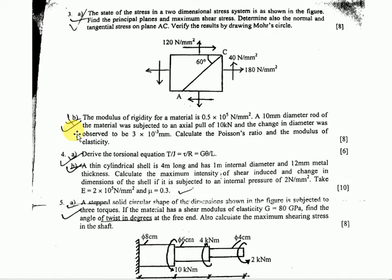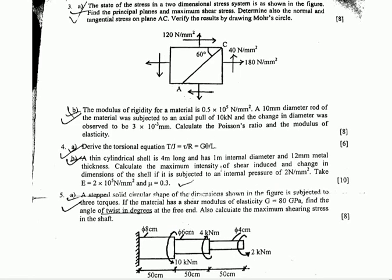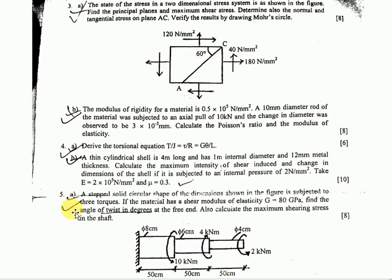Question number 4 relates to either Chapter 6 on torsion or Chapter 5 on thin-walled vessels. Question 4 part B could be from Chapter 5 on thin-walled vessels.